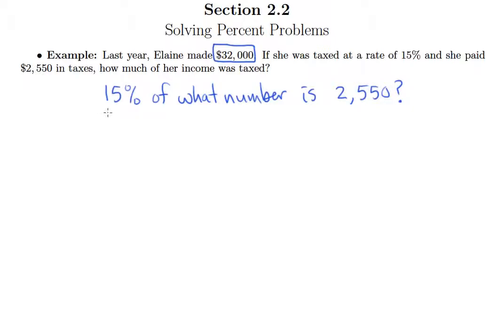Because she's taxed on whatever this mysterious number is. She takes 15% of it and that equals how much she actually had to pay in taxes, $2,550.